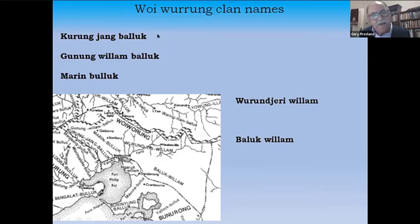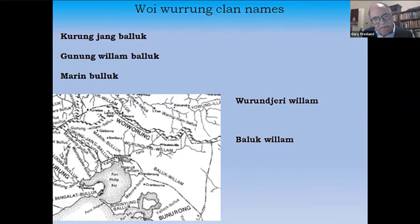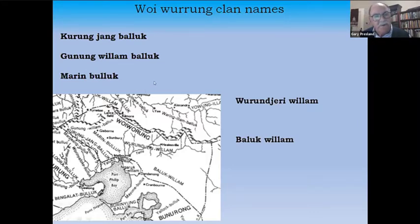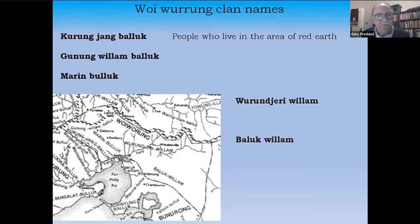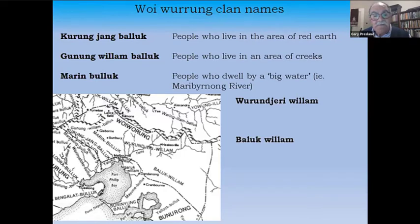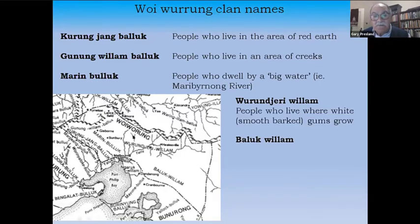In the case of the Woiwurrung, these five named clans were named partly to differentiate them from other clans, but also to describe the country in which people lived. The Karanjung Balak, for example — 'Balak' means people — are people who live in the area of Red Earth, in the creeks of the foothills of the Dividing Range, close to the Marabalong River, the 'big water,' where white gums grow.